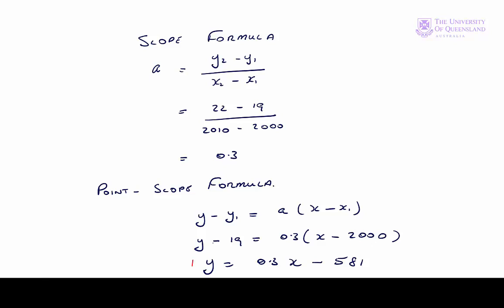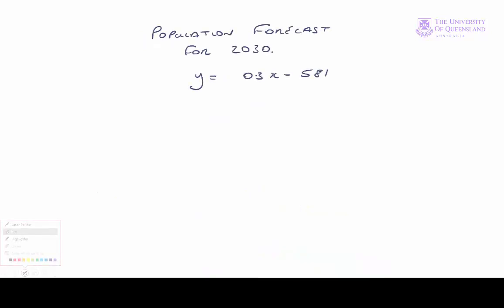Once we have our growth equation, we can use it to forecast. With our equation, we substitute in the appropriate value of x. So x equals 2030 for the year. So our forecast population y will equal 0.3 times 2030, minus 580, which is 28.